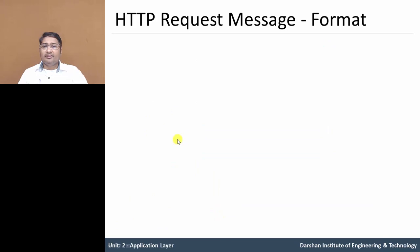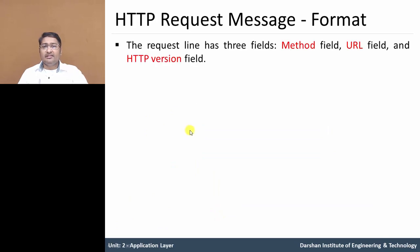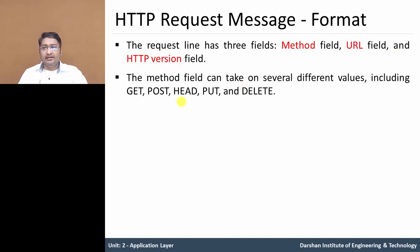Now, in the request message, the request line has a total of three fields. First field is the method field, second is the URL field, and third one is the HTTP version field. The method field means GET, POST, HEAD, PUT, DELETE — these are the basic commands which have different values.